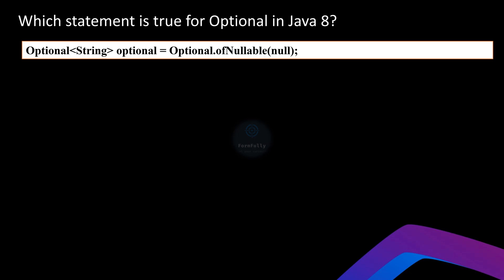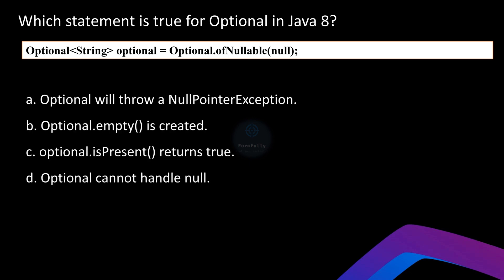Let's move on to the question about `Optional` in Java 8. You can pause the video and note your answer. Optional is a container that may or may not contain a value. It's commonly used to prevent NullPointerExceptions by wrapping potentially null values and providing methods to safely handle them. Here we are using `Optional.ofNullable` to create an Optional object. The `ofNullable` method allows us to pass a value that could potentially be null. If the value is non-null it returns an Optional containing that value; if null it returns `Optional.empty()`.